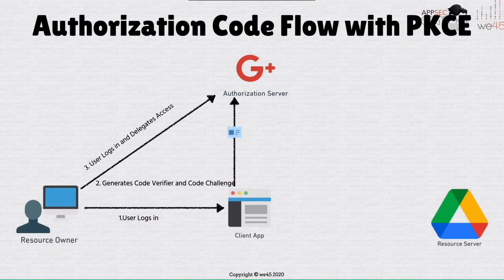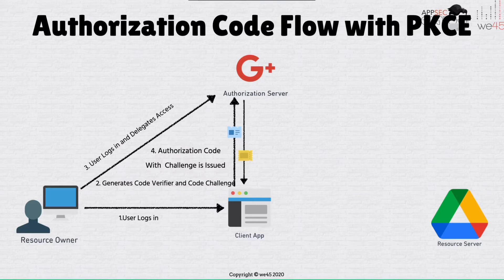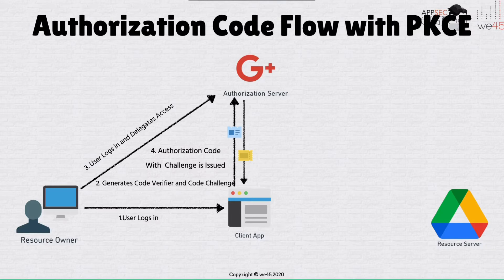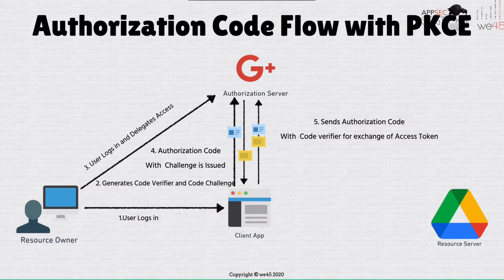The user gives consent, and the authorization server is then in a position to issue the authorization code along with the code challenge — it says: here is the authorization code and here is the challenge you sent me in the initial request. The client application then exchanges the authorization code for an access token, but this time along with the authorization code and client ID it also sends the code verifier — the original high-entropy string, not the hashed version.